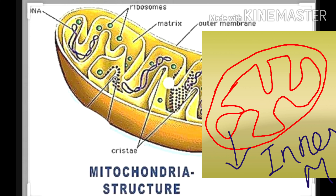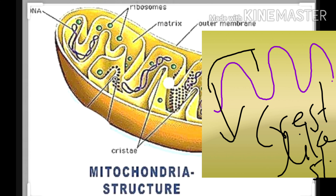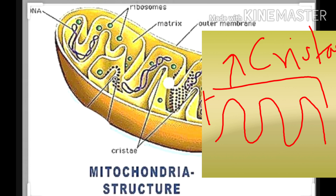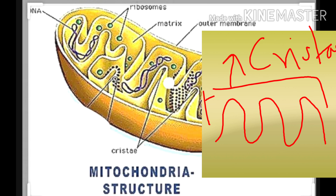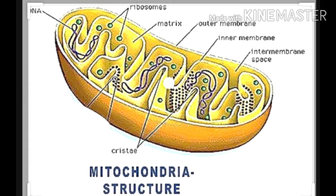In this diagram I have drawn the outer membrane and the inner membrane that is folded at certain intervals to form crest-like structures, which is known as cristae. Between the outer membrane and the inner membrane there is a space that is called the intermembrane space.